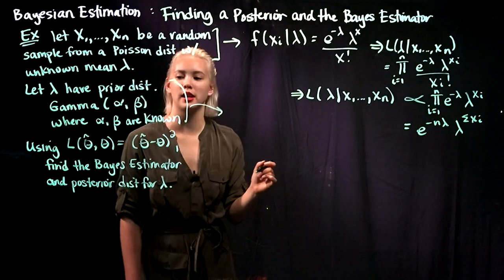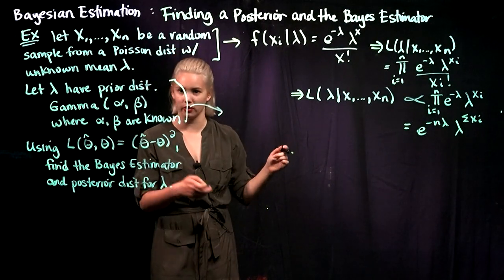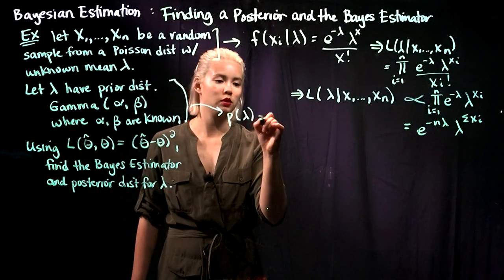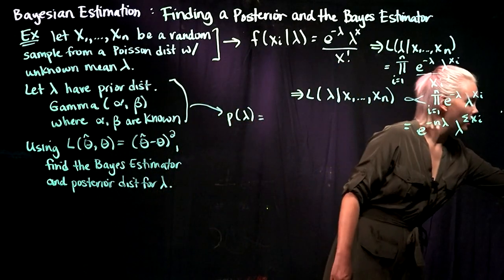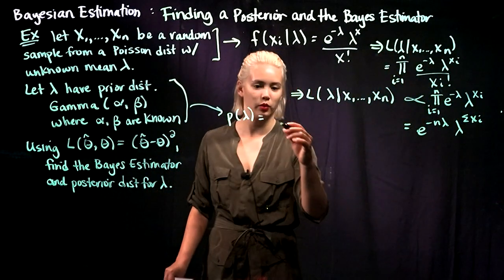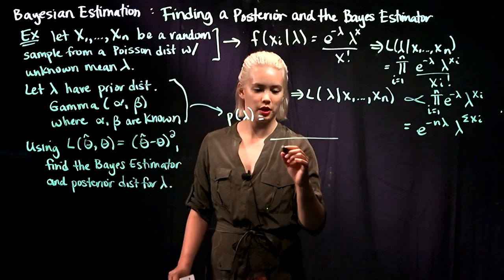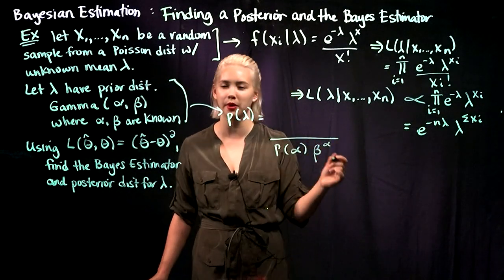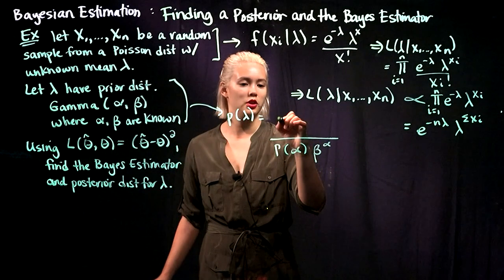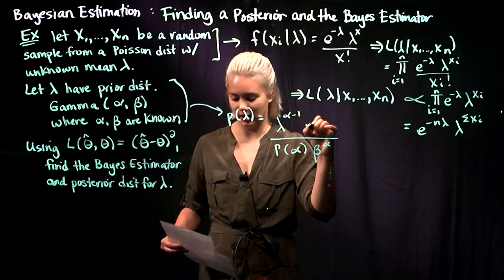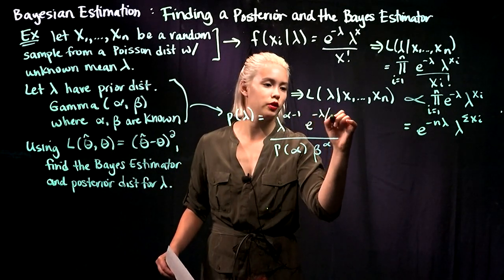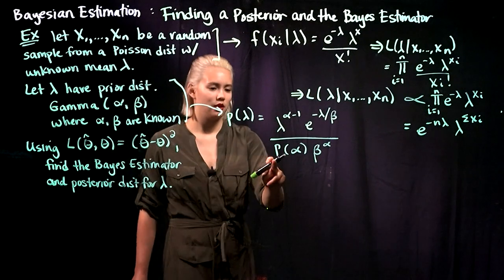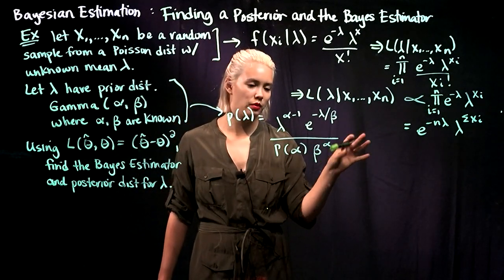For the prior distribution, we look up the gamma distribution. We have some constants including the gamma function of alpha and beta to the alpha in the denominator — all known constants we can drop. In the numerator, we have lambda to the alpha minus one, and e to the negative lambda over beta. So there's our prior distribution, and again we can drop the constant terms.